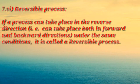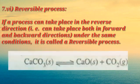Reversible process: if a process can take place in the reverse direction — that is, can take place both in the forward and backward directions under the same conditions — it is called a reversible process. An example of a reversible process involves calcium carbonate.